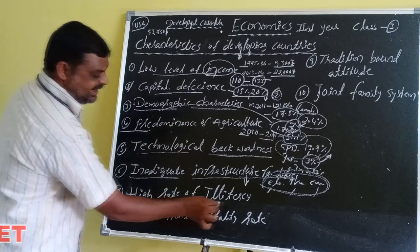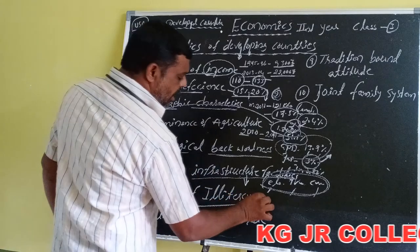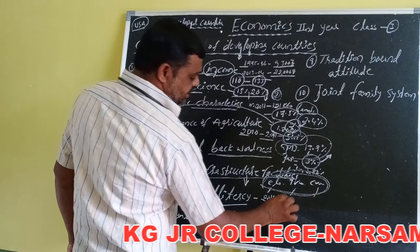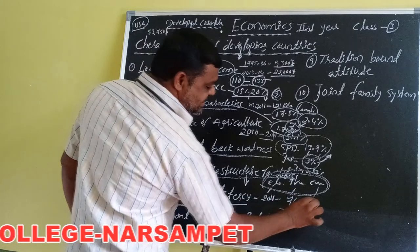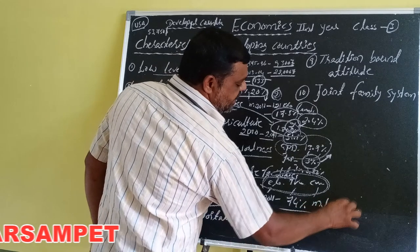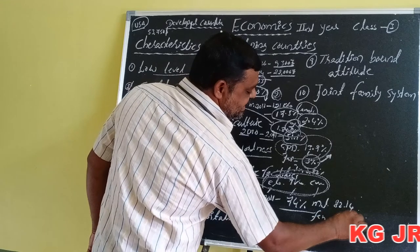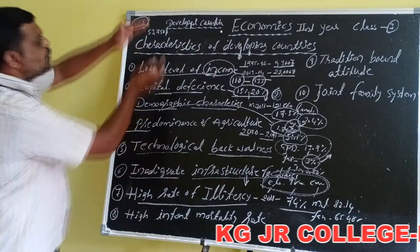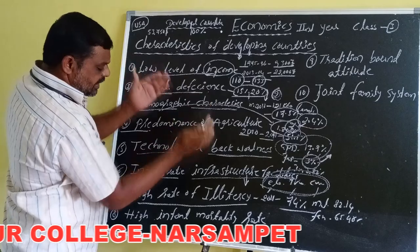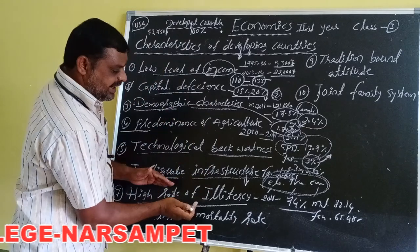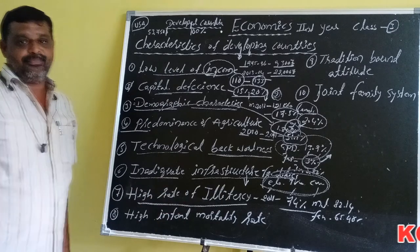The next characteristic is a high rate of illiteracy. In India, according to 2011, the total literacy rate is only 74%. The male literacy rate is 82.14% and the female literacy rate is 65.46%. Compared to developed countries which have 100% literacy, developing countries have a low literacy rate.